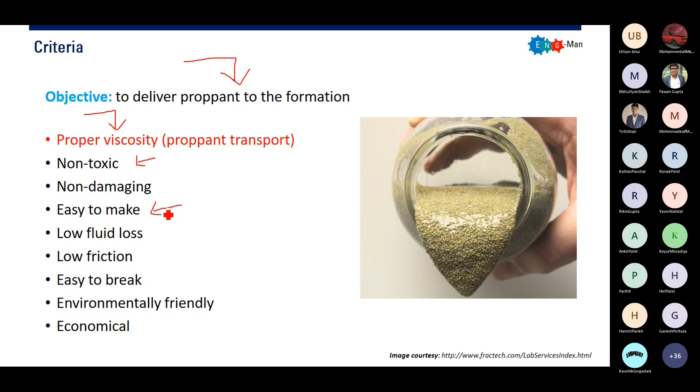We will make it on the fly during the operation, we will mix the frag fluid, so it has to be easy to make and low fluid loss. We don't want the fluid to be lost to the reservoir. It can also result in screen out, where you cannot frag your reservoir because all the propane will accumulate in the wellbore. It should be of low friction so that there will be small pressure drop across the tubing when you pump your frag fluid. Easy to break, environmentally friendly, and of course economical.